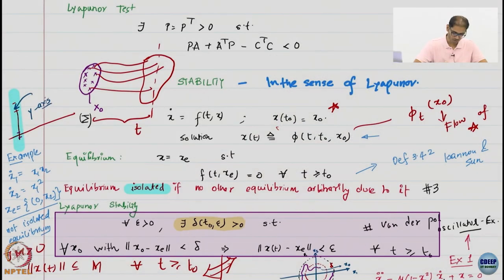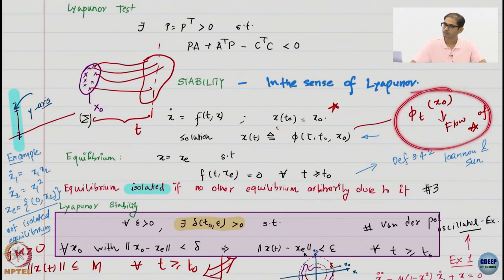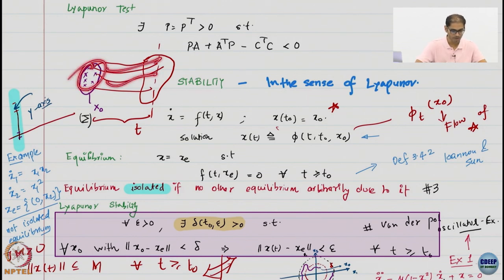Welcome to Control of Nonlinear Dynamical Systems. We are already in the second week and have started some more serious material. Last time we started looking at stability, beginning by fixing a system, initial conditions, and defining what the solution is. We also spoke about the notion of the flow, which essentially tells you how a bunch of initial conditions map to some final conditions after a certain amount of time.